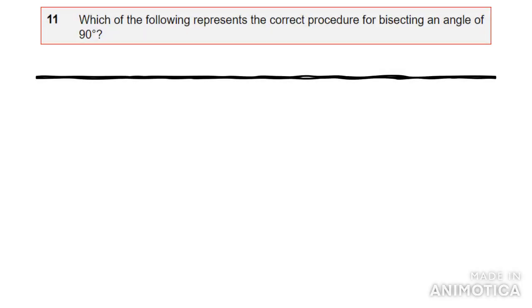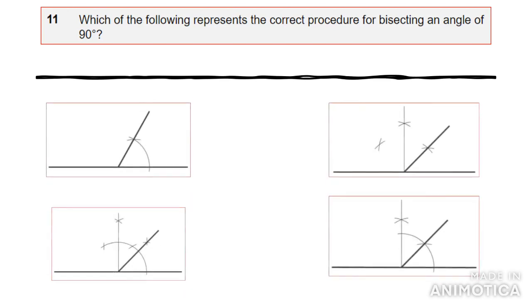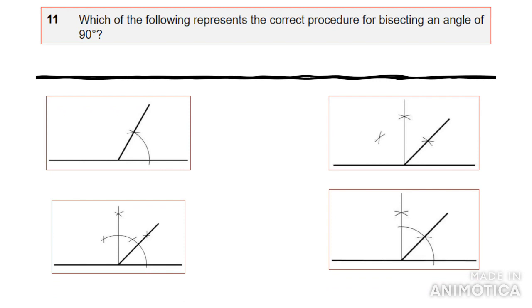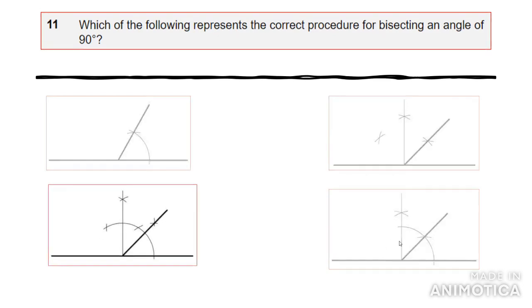Number 11 asks which of the following represents the correct procedure for bisecting an angle of 90 degrees. Bisecting means dividing into two equal areas. The first two options are incorrect because you need two points in order to draw your two arcs. The second option fails for the same reason.